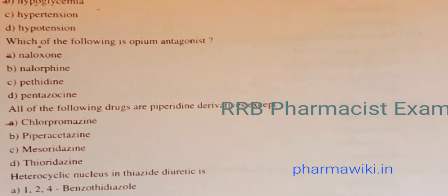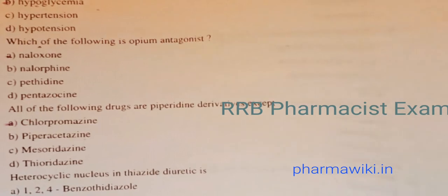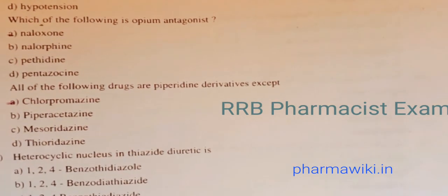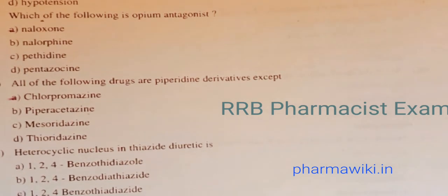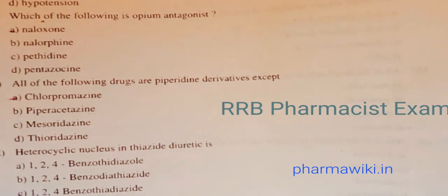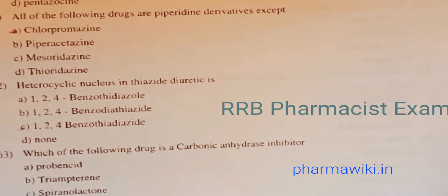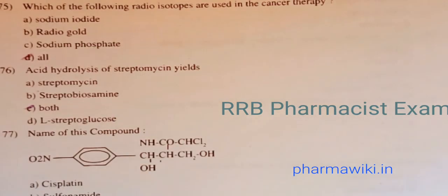Question 59: All of the following drugs are piperidine derivatives except — chlorpromazine, piperacetazine, mesoridazine? The answer is chlorpromazine. Question 60: The heterocyclic nucleus of thiazide diuretics is 1,2,4-benzothiadiazide.